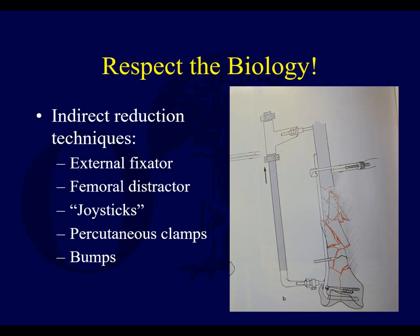Respecting biology means using indirect reduction. From an old AO textbook — the AO manual or Dr. Mast's text on planning and reduction techniques in fracture surgery — you can see a distractor in place as an indirect reduction technique. There's also a clamp coming from the medial side, so that's definitely not indirect. You can see the use of a dental pick to gently bring some medial fragments into place while still maintaining their muscular attachments — that would be considered indirect. You can also use pins as joysticks, percutaneous clamps, and bumps, which are particularly helpful to overcome the pull of the gastrocnemius.